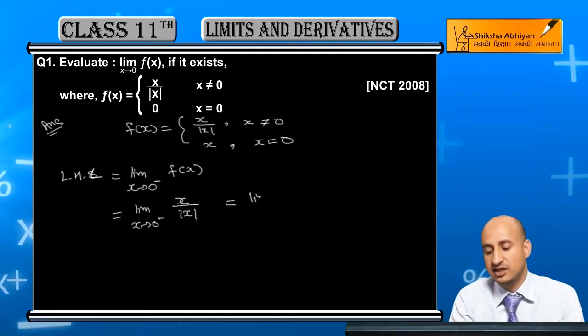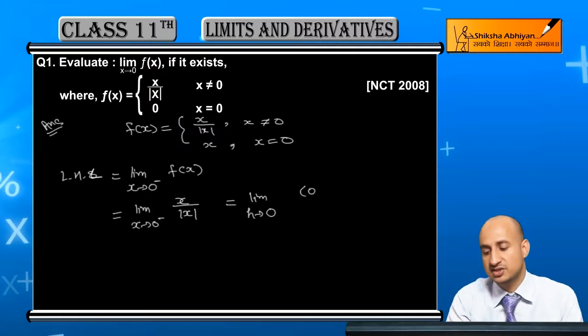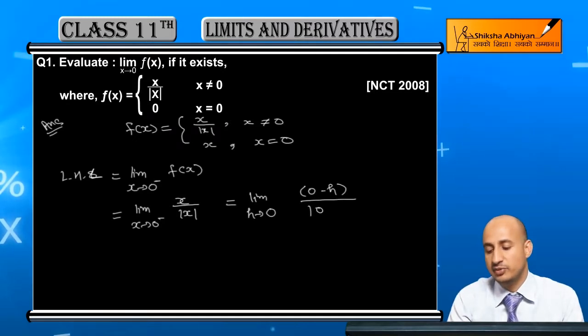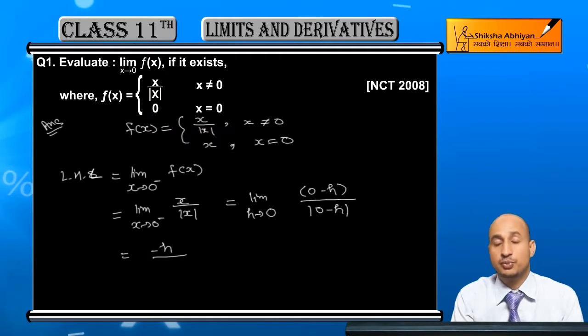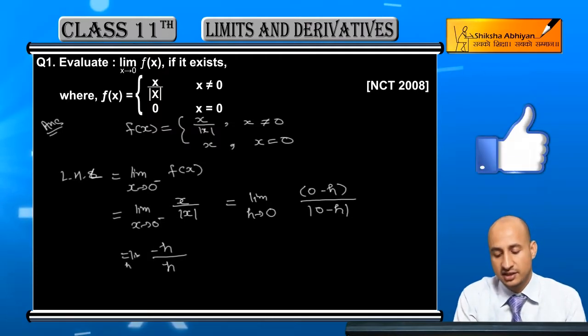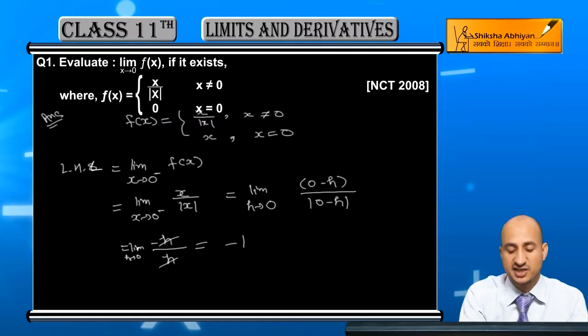This can be written as limit h→0 where we substitute x = 0 - h. After simplification, we get -h/h which equals -1.